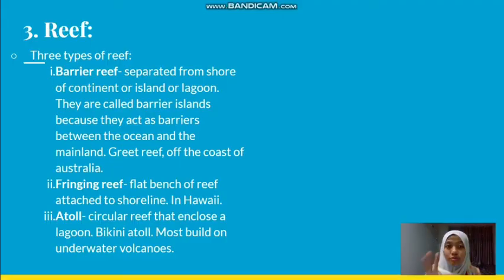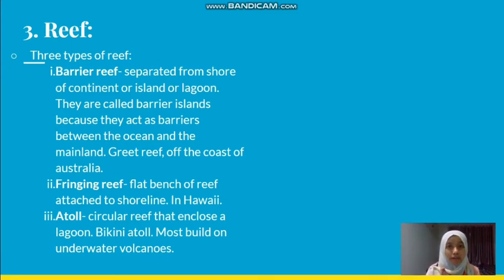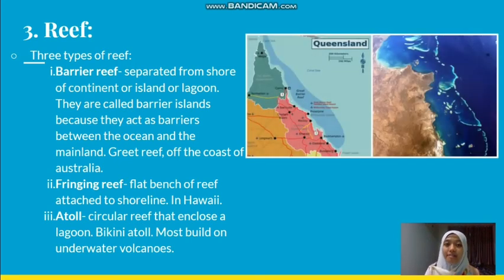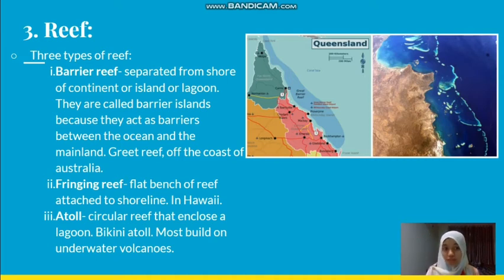There are three types of reef. The first one is barrier reef. Barrier reef is formed around a continental island. They are called barrier reefs because they act as a barrier between the ocean and the mainland, especially protecting against strong waves.